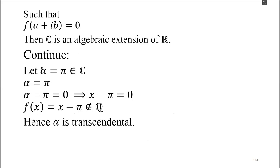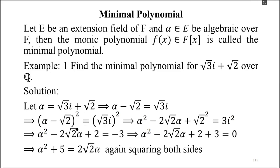If we put α = π, pi is a complex number, but the polynomial here is x − π. When you have x − π, π is not a rational number, so we can conclude that when forming the polynomial, the resultant polynomial does not belong to the rational numbers, hence your α is a transcendental number.